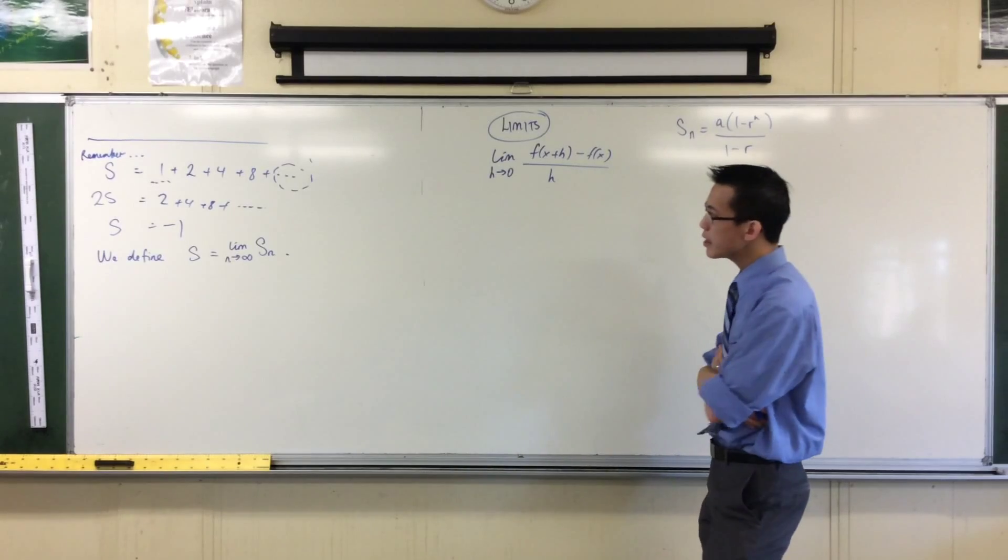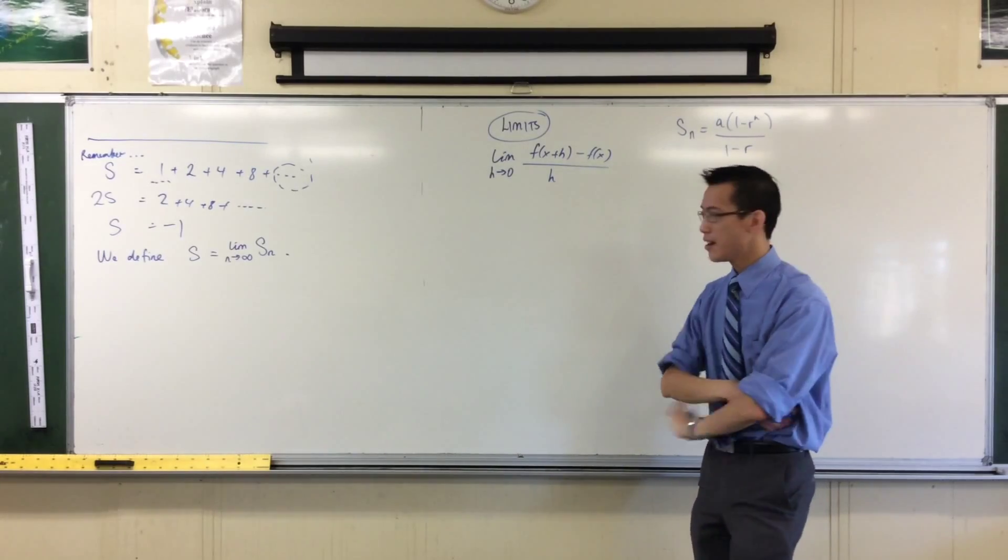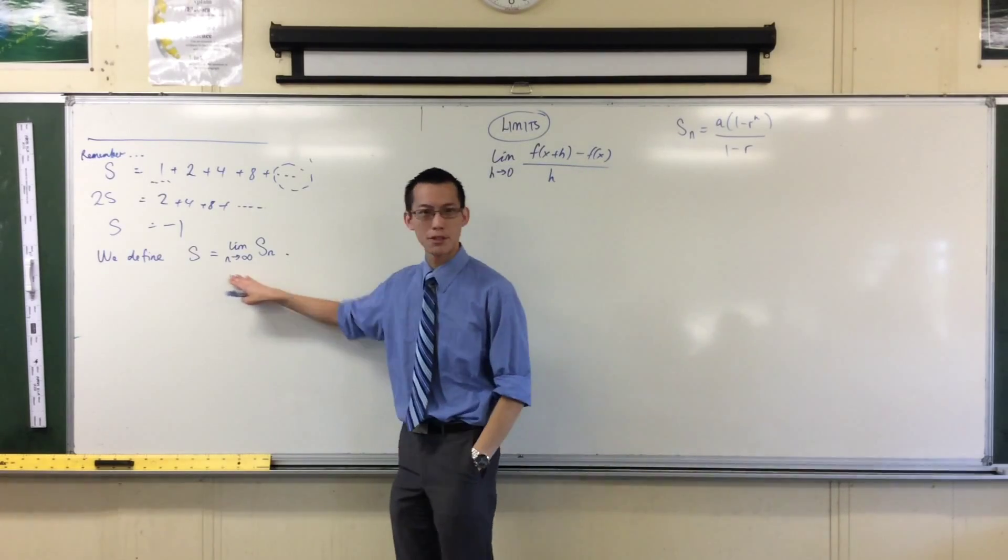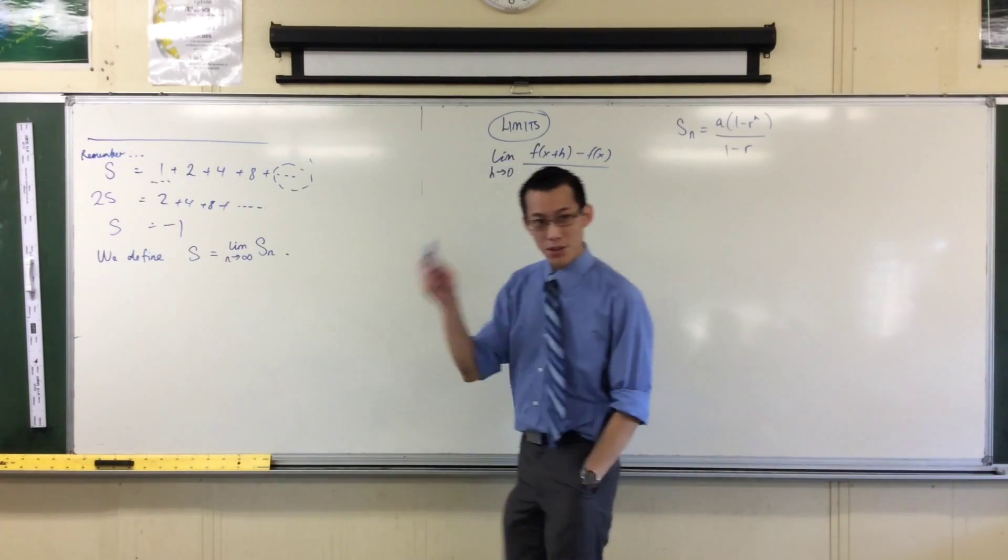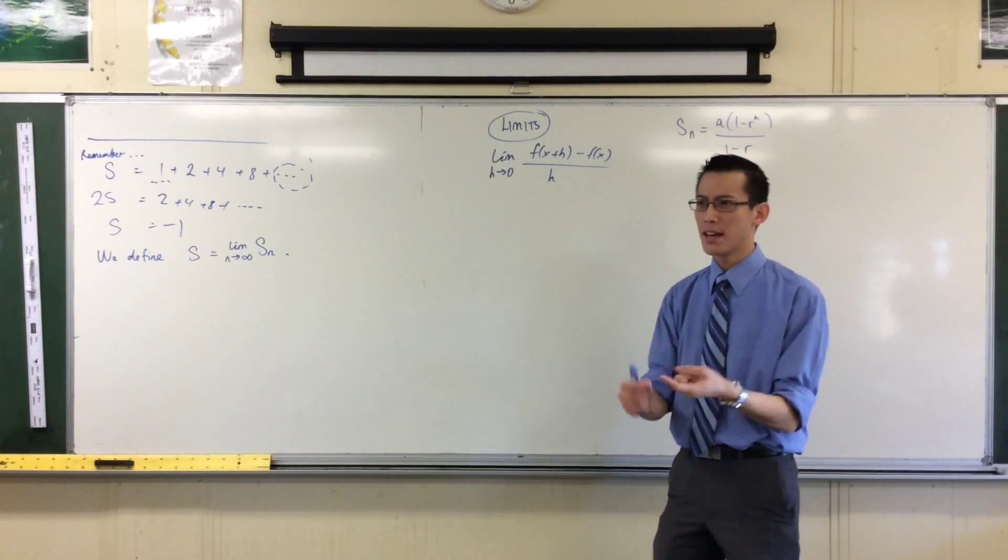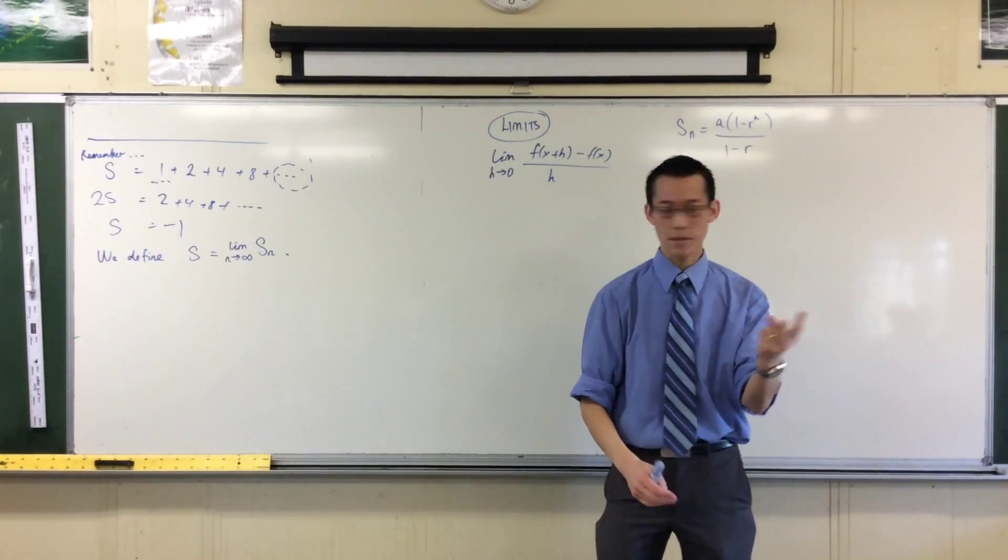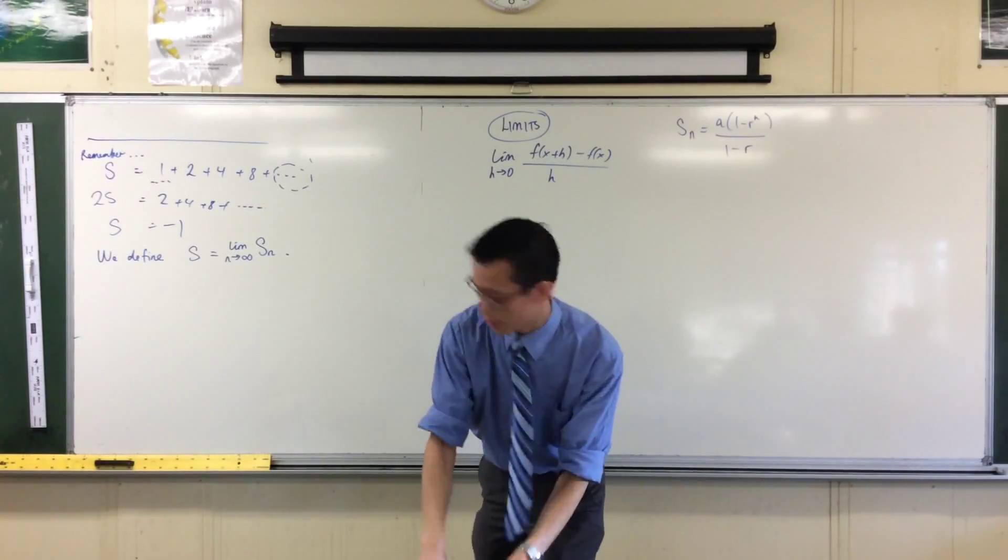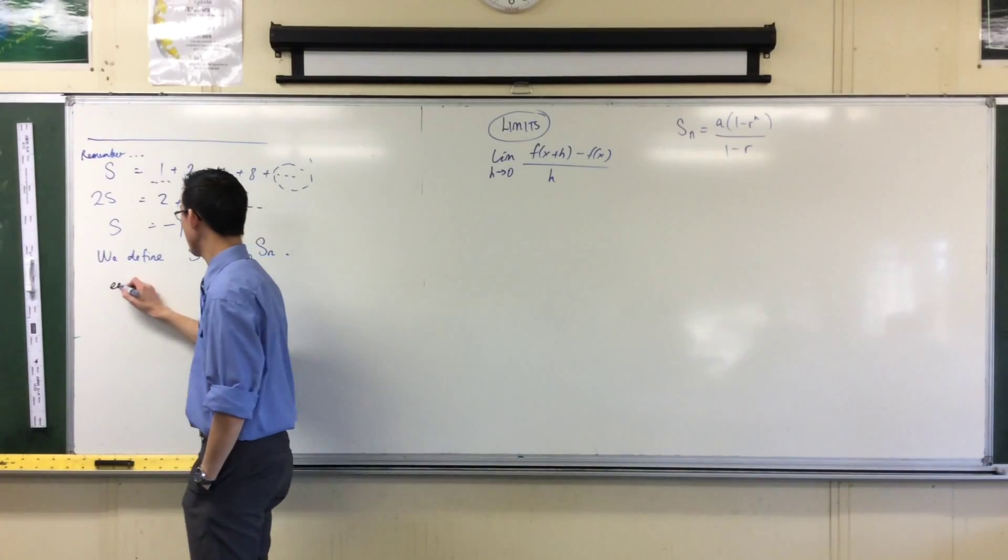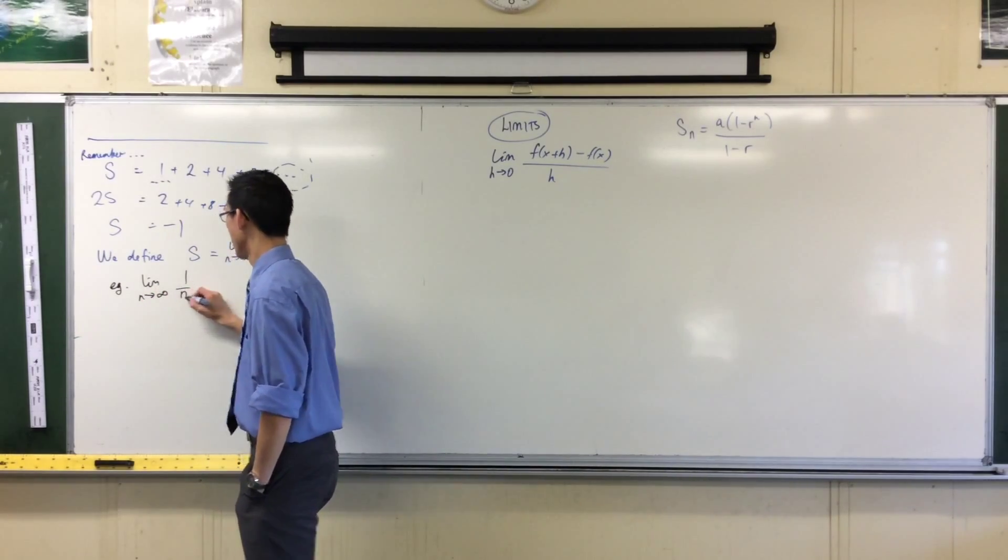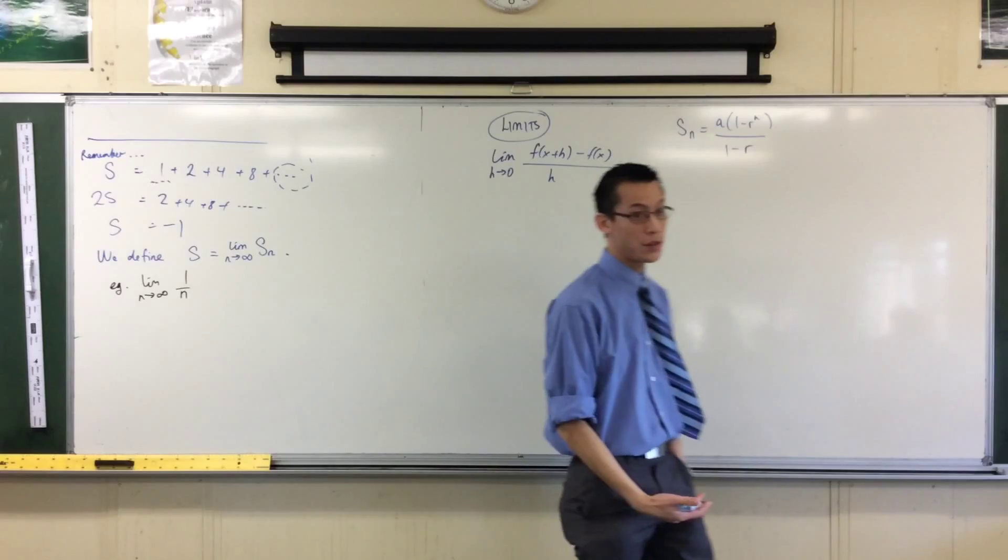So, therefore, what we're going to define is this term, S. What it's equal to is, and we're going to use our limit notation here. It's the limit of the partial sum as n gets bigger, and bigger, and bigger. We have language for this. We would say n approaches infinity. Are you okay with that? That's what we're defining as S. So, this is now kind of a different creature.